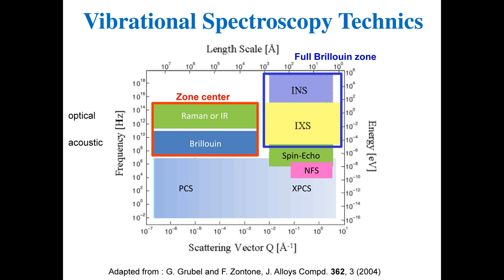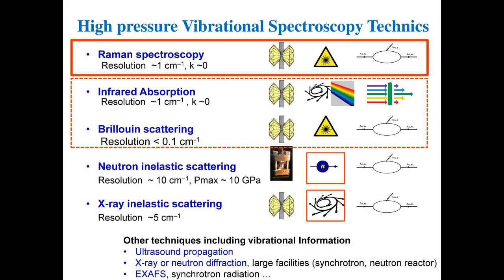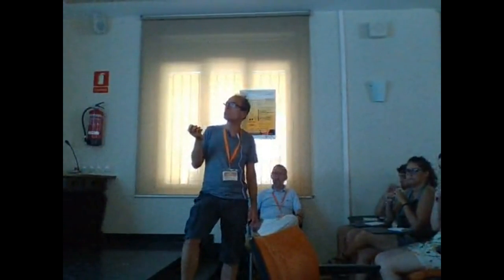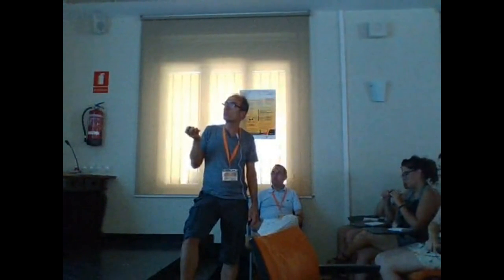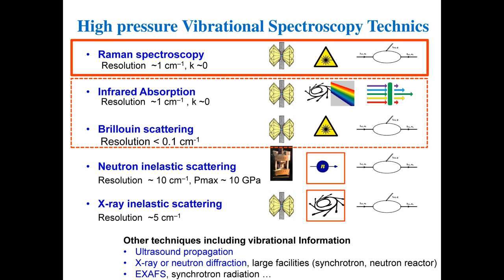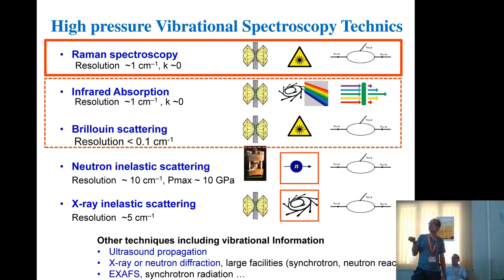Synchrotron light, infrared sources, neutrons, and X-rays from a synchrotron can all be used in scattering experiments, but the scattering cross-section for X-rays is so small that there is essentially no inelastic scattering experiment done with conventional sources. The resolution required differs across techniques: about one inverse centimeter for Raman, much smaller for infrared, and even more so for Brillouin scattering.